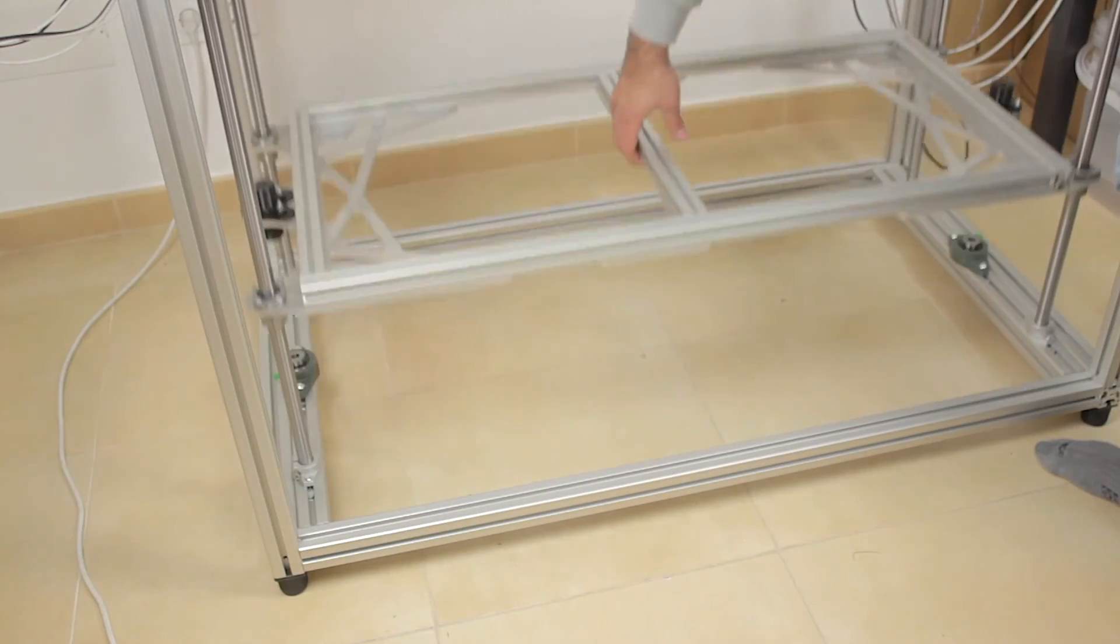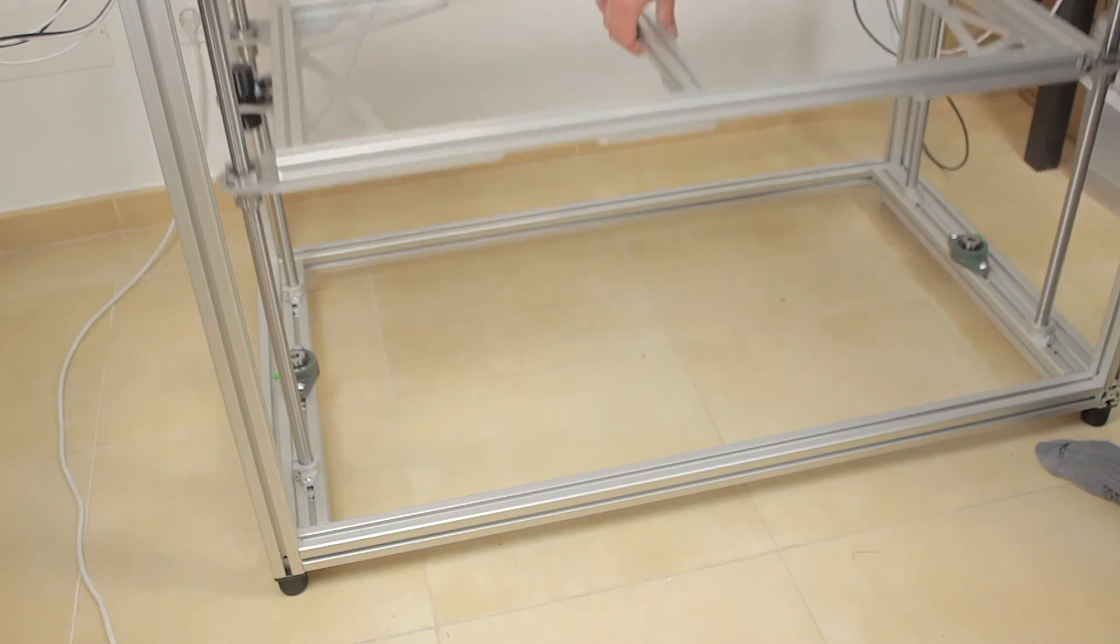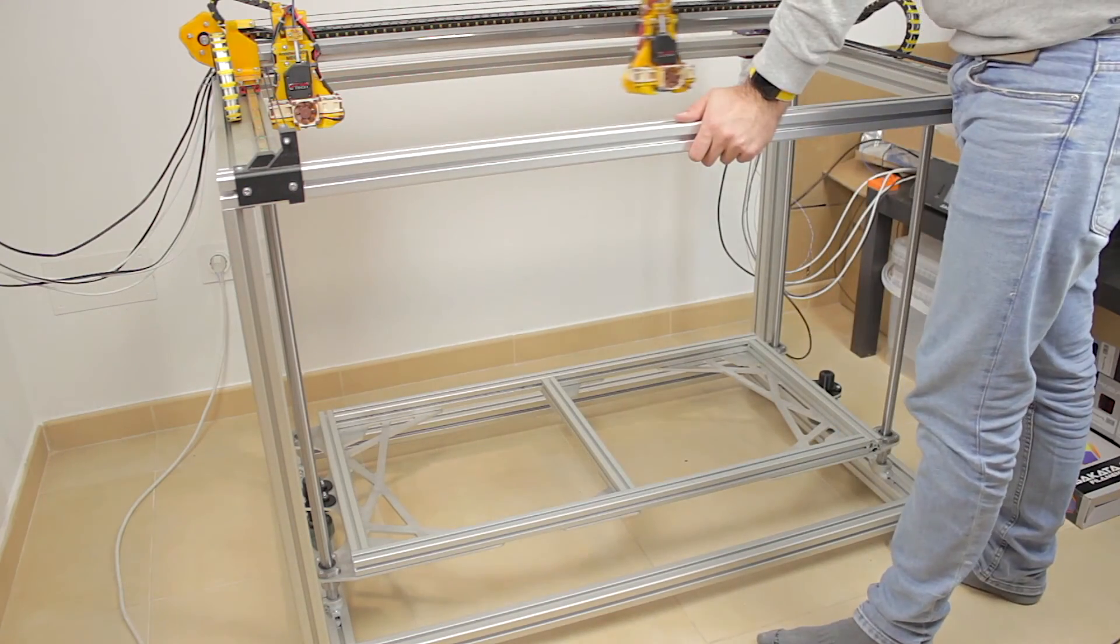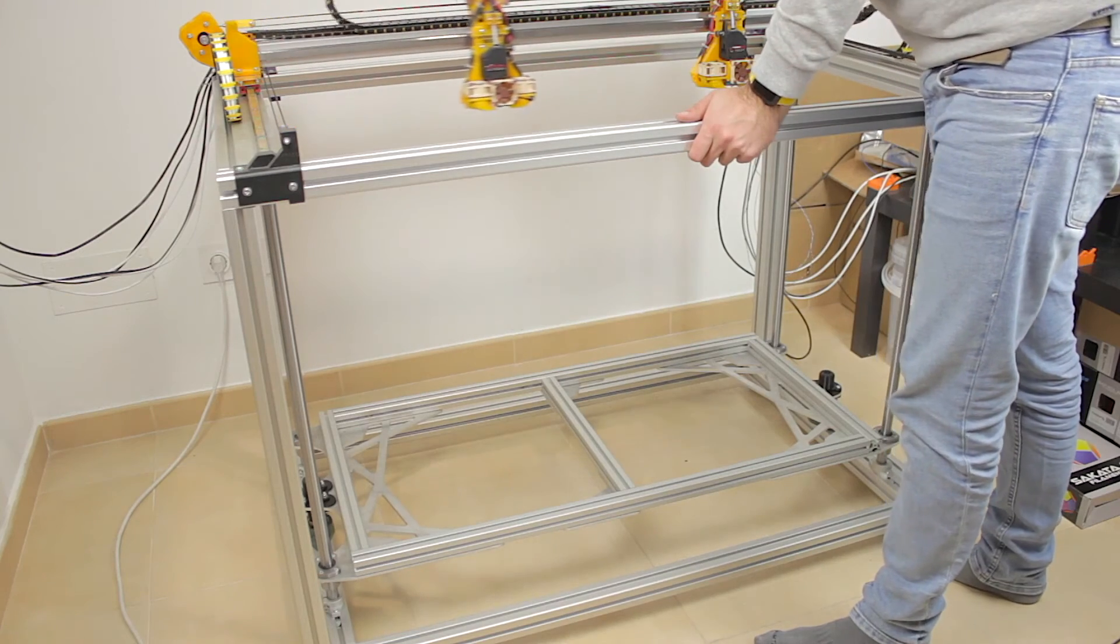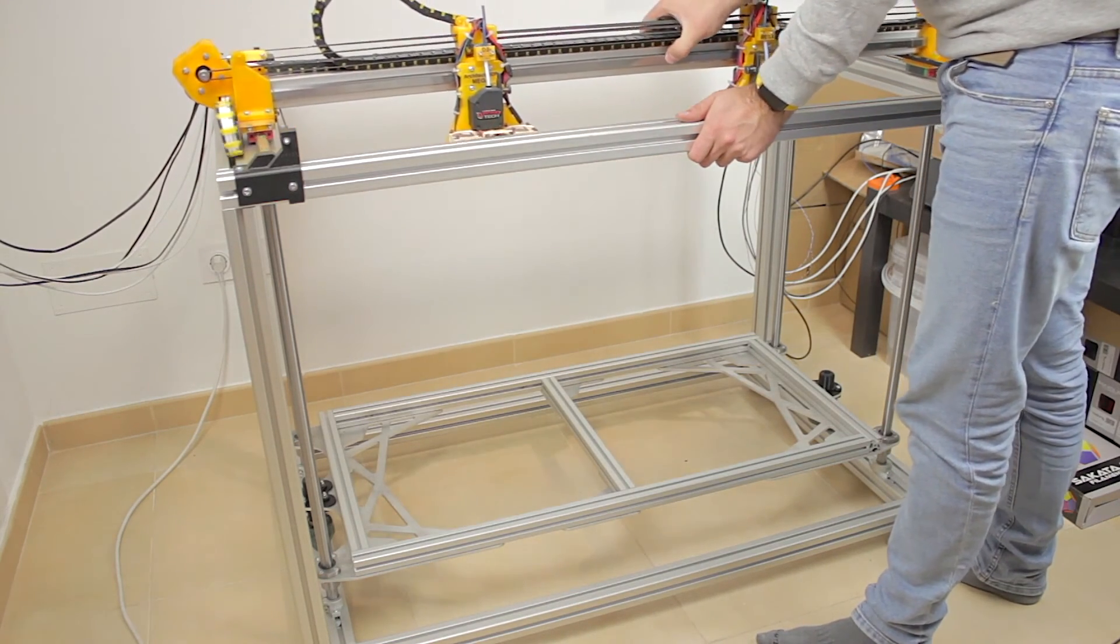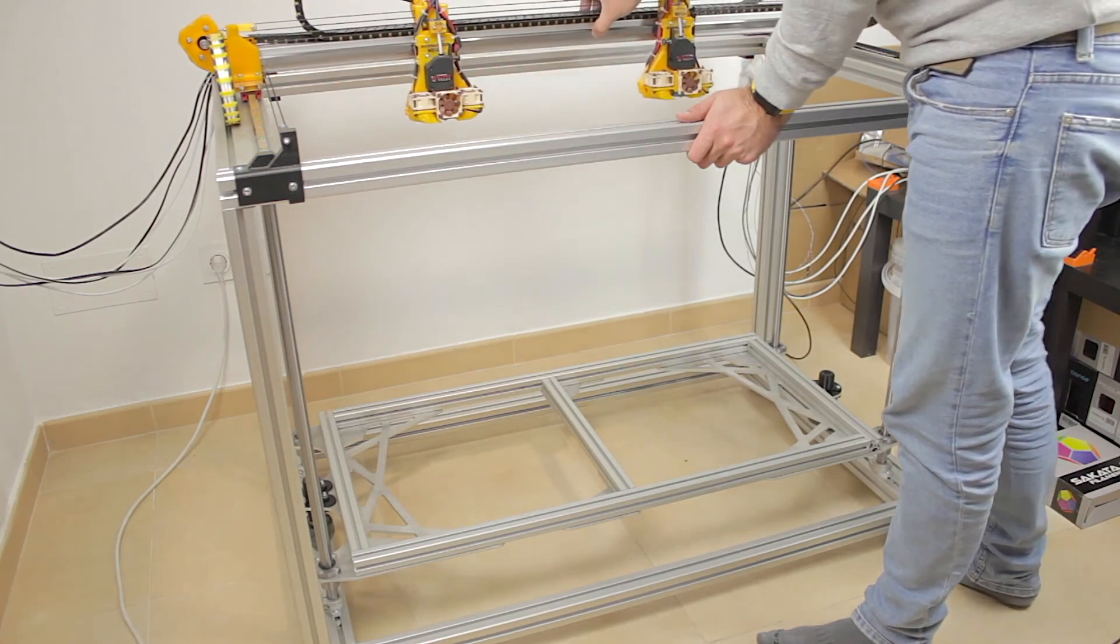After a couple minutes adjusting everything in place, we finally got it moving guys. Now we are able to move the two extruders through the X axis as well as the Y axis, and now also the Z axis guys. I'm so excited to watch the printer finally working.